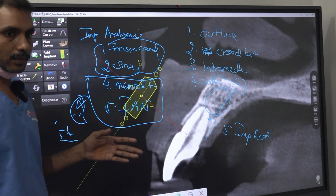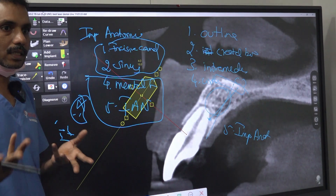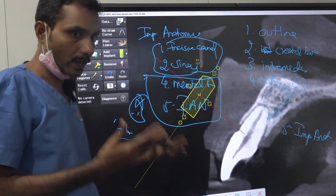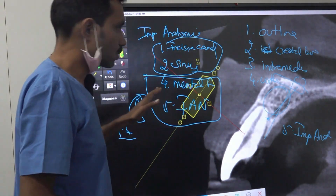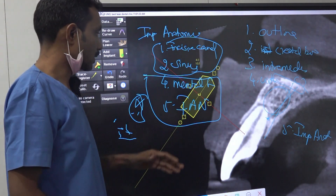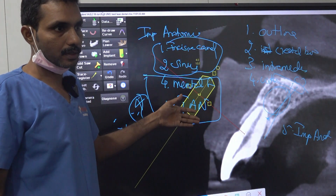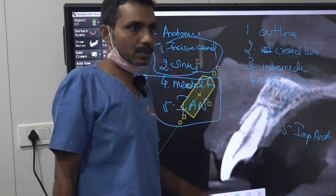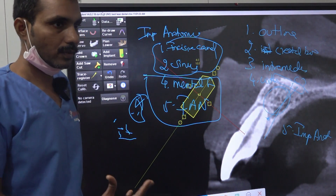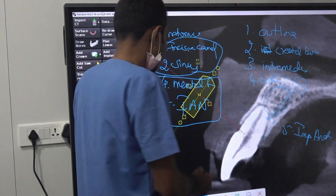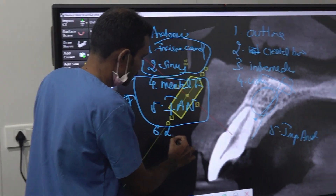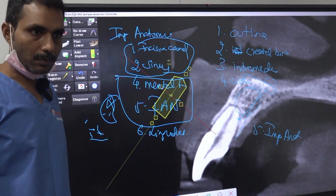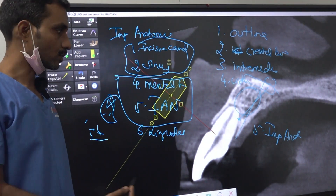The most important complication in implantology to be avoided is nerve injury. This is very important because the healing is unpredictable — it is not in our hands and we cannot do anything to influence healing. So better to prevent it. Otherwise the patient will become a lifetime patient for you. Comparatively the upper anteriors are safer — no very dangerous anatomical structures are present. For the anterior mandible, there will be lingual vessels lingually that we should not injure.